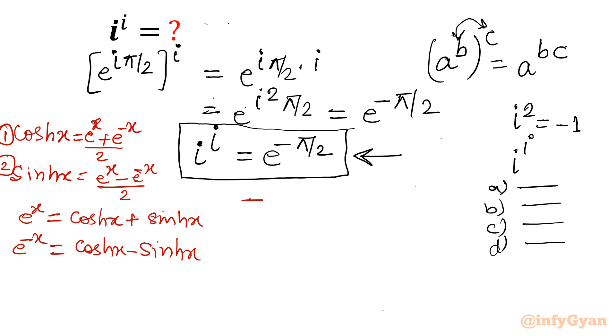So our answer will be e^(-π/2). So that value will be, you will write, in place of x we should write π/2. So cosh(π/2) minus sinh(π/2).